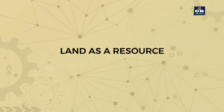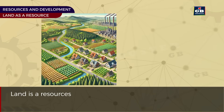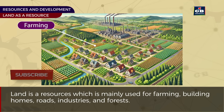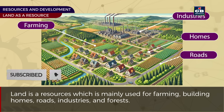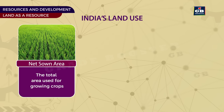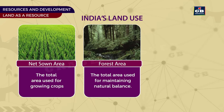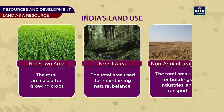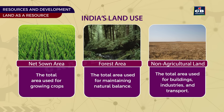Land as a resource. Land is a resource which is mainly used for farming, building homes, roads, industries, and forests. India's land is mainly divided into three areas: net sown area — the total area used for growing crops; forest area — the total area used for maintaining natural balance; and non-agricultural land — the total area used for buildings, industries, and transport.